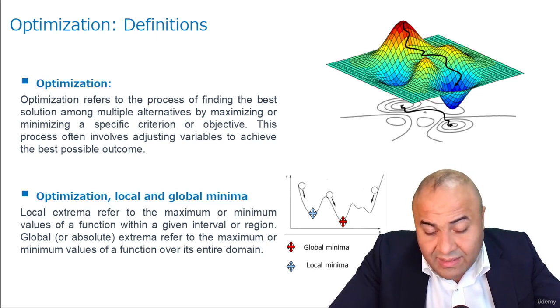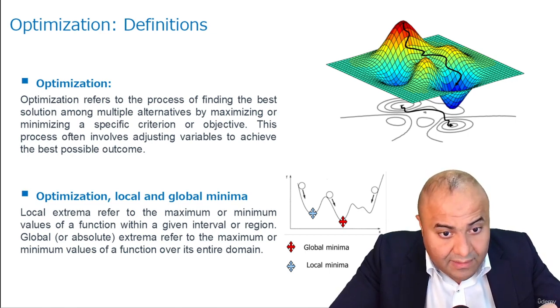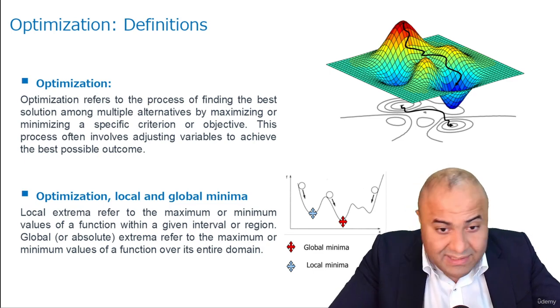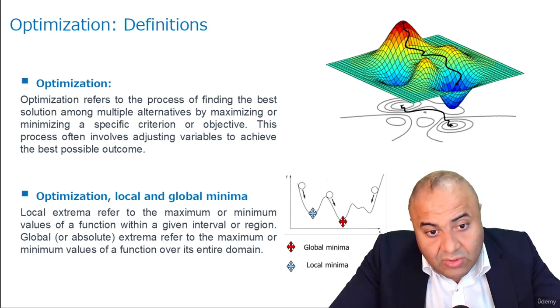However, in many times, we don't find the global minima. We find local minima, which is a point that is low, but not the lowest, as you can see also in the graph behind me.